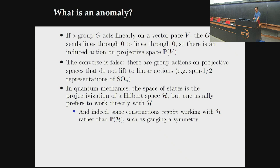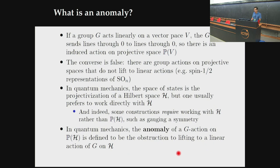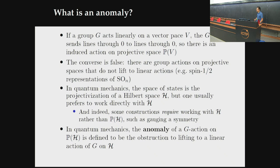This is really a fact about quantum mechanics. Quantum mechanics is projective — when we talk about states, we're talking about the projectivization of what we usually call the state space, the Hilbert space. But we like to work with the Hilbert space, and various constructions actually require it rather than projectivizing. For example, gauging a symmetry: if you have a symmetry on the projectivization but it does not lift to the Hilbert space, that's a headache — that is an example of an anomaly. It's a projective G-action that does not lift to a linear G-action.